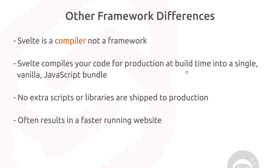We don't deploy the Svelte library like we would with React or Vue — we just deploy that one single JavaScript file, and for that reason it results in a very speedy, fast website. Vue and React also compile code at build time for production, however they also ship the bundle together with either the Vue or React library, so that in the browser that library does the work with the compiled code. Svelte doesn't do that — it just ships that one bundle, not a Svelte library as well.